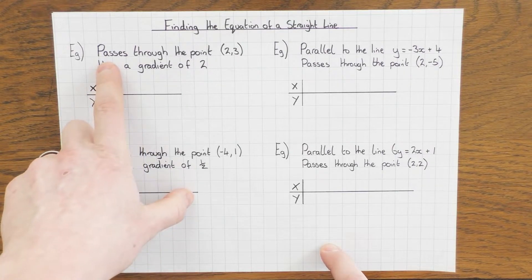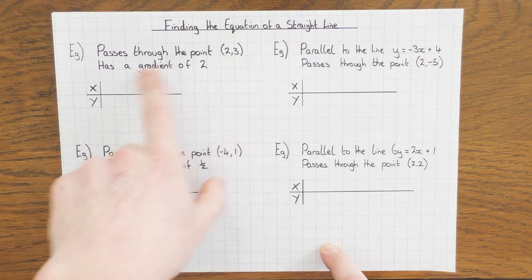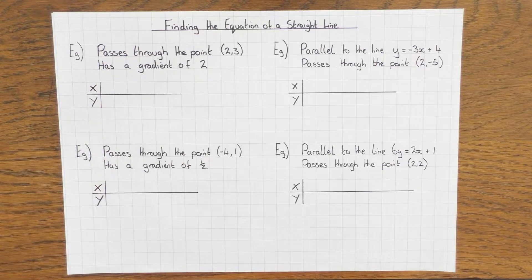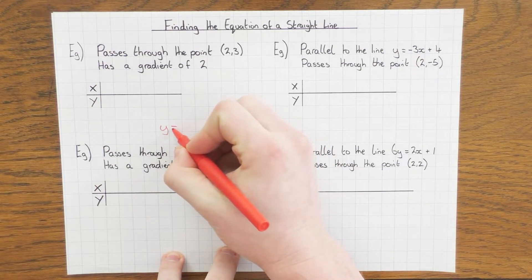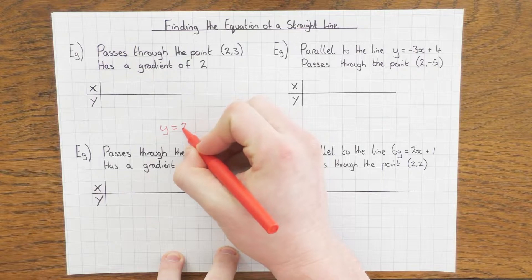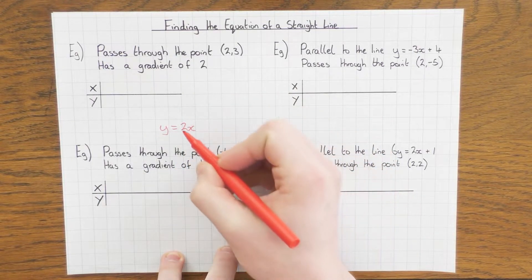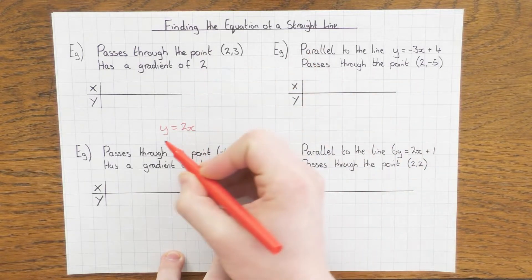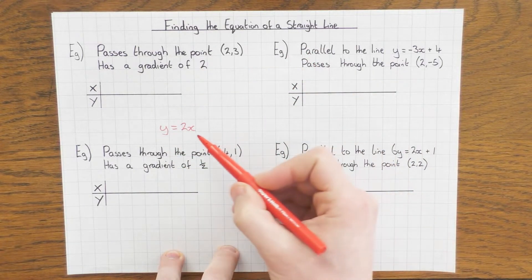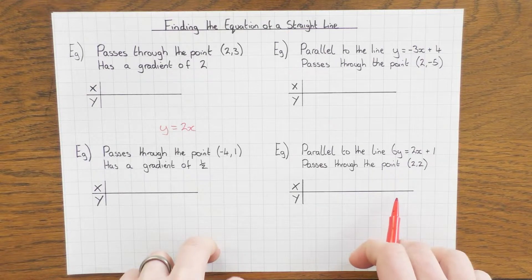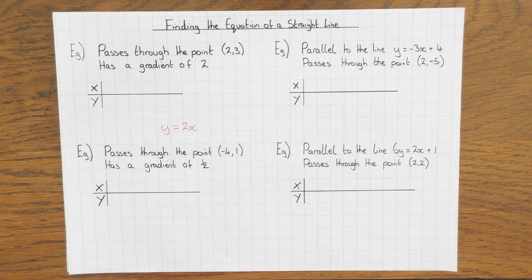The first question: I want to work out the equation of a line that passes through the point (2, 3) and we're told it has the gradient of 2. So straight away we can say y equals 2x. Remember the equation of a straight line is y = mx + c, where m is the gradient. What we need to do now is work out where this crosses the y-axis.